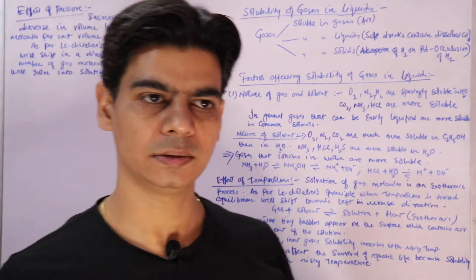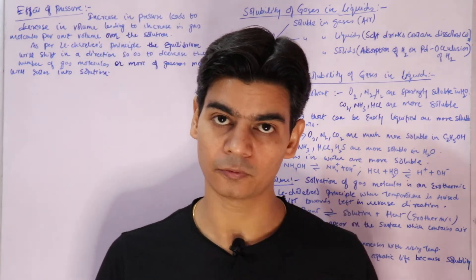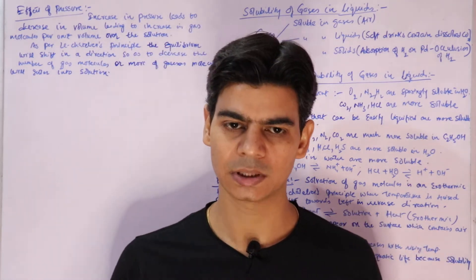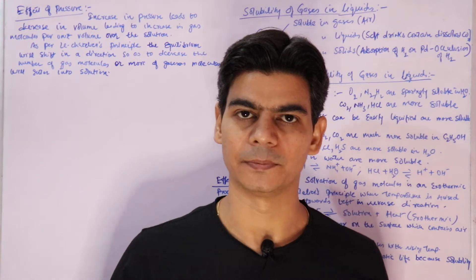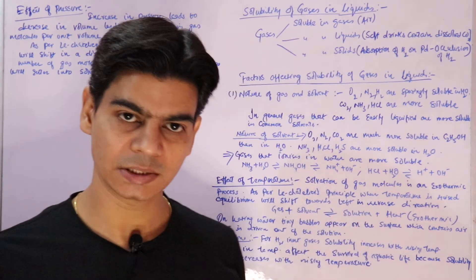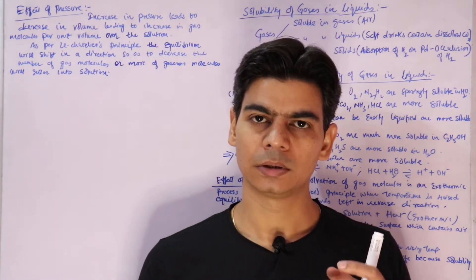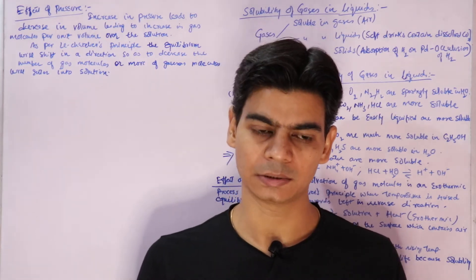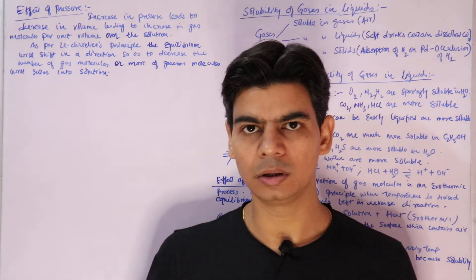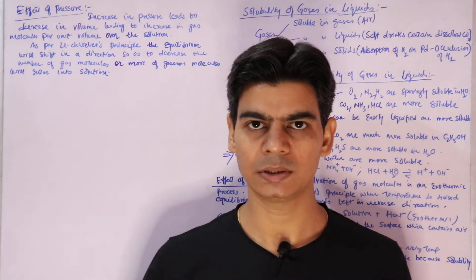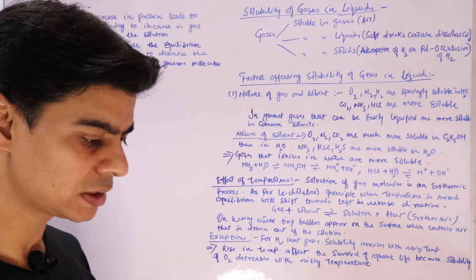Gases are also soluble in liquids and in solids. The most common example of gases soluble in liquids is soft drinks. We know that soft drinks contain carbon dioxide dissolved under pressure. That is the reason when you open a bottle of soft drinks, the gas comes out with a gush — that gas is dissolved carbon dioxide, and it is under pressure. When you open the bottle, the pressure is released, so the gas comes out.